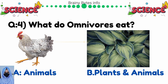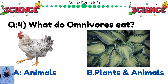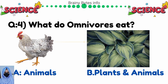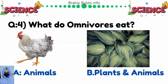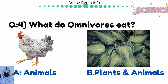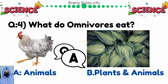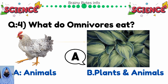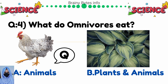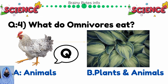What do omnivores eat? Option A: animals, option B: plants and animals. Correct answer is both plants and animals.